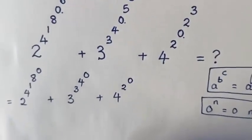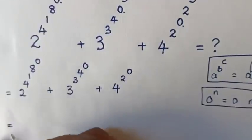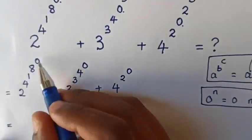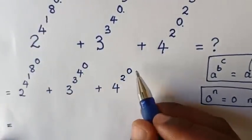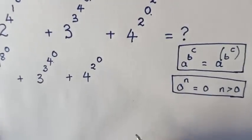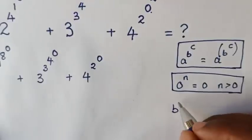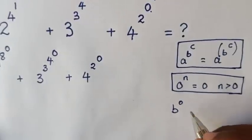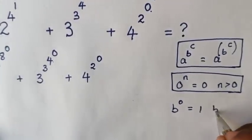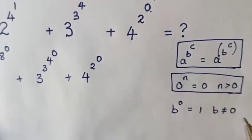These exponents will be equal to 2 power of 2. From here, 8 power of 0, 4 power of 0, 2 power of 0. We will apply this rule: b power of 0 is equal to 1, such that b is not equal to 0.